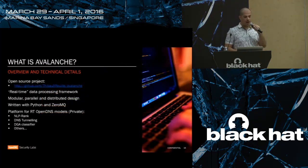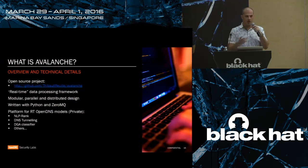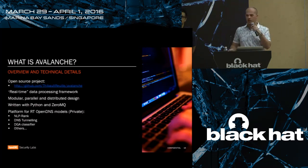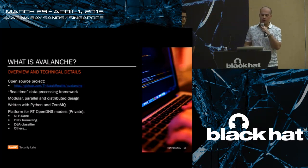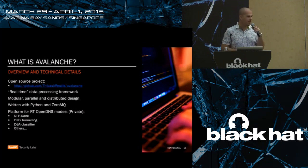A couple of points about the Avalanche project: it's open source and available. We're releasing it for Black Hat Asia this year — available at tiborei.com/Avalanche and it will be included in the conference archive. This is our real-time data processing framework. It is highly modular, parallel, with a distributed design. It's fully written in Python with 0MQ. If you're not familiar with 0MQ, it's an amazing messaging library I highly recommend. This is the framework we use to run many different real-time models on our traffic. Unfortunately we can't share all those models because they are private IP, but we're sharing the core engine.